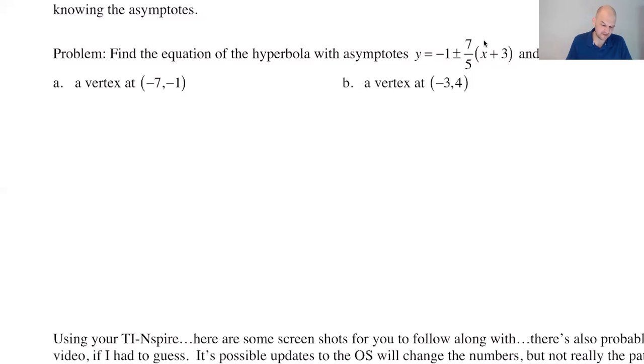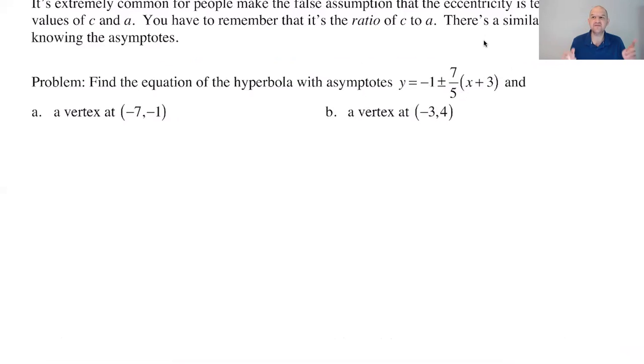So for this problem, we want the equation of a hyperbola with asymptotes. As soon as you're told it's a conic with asymptotes, it's a hyperbola. But the asymptotes here are really nice because they're given in point-slope form. If you were given each individual asymptote, you'd have to solve a system of equations to find where those intersect because the intersection point is going to be the center.